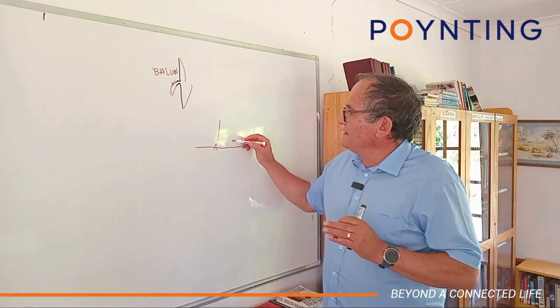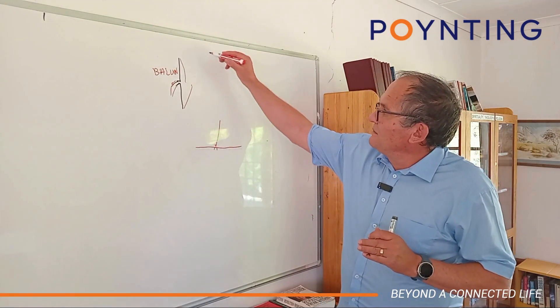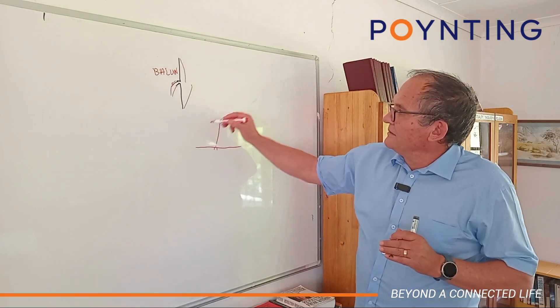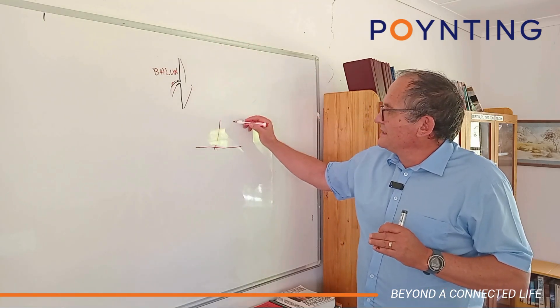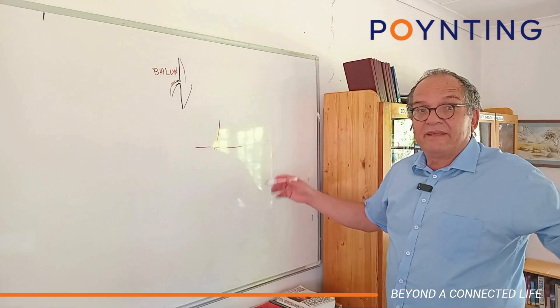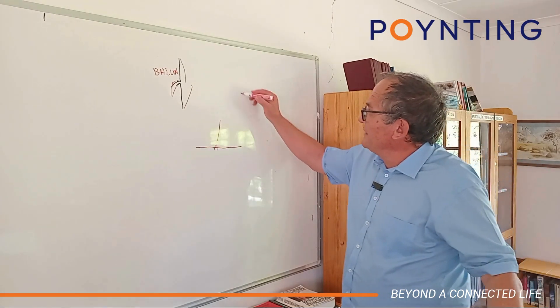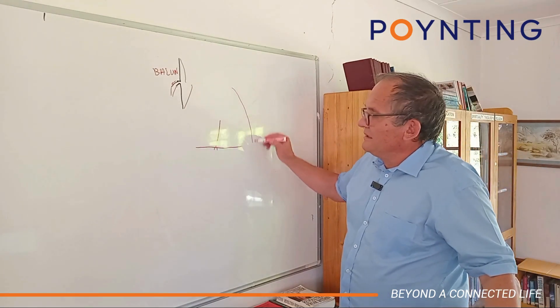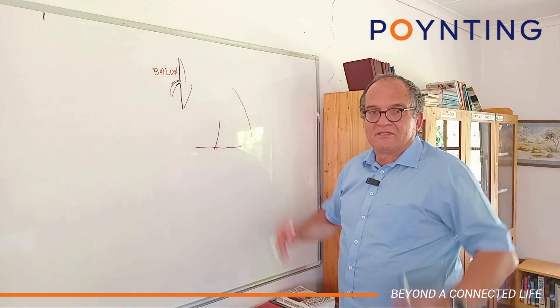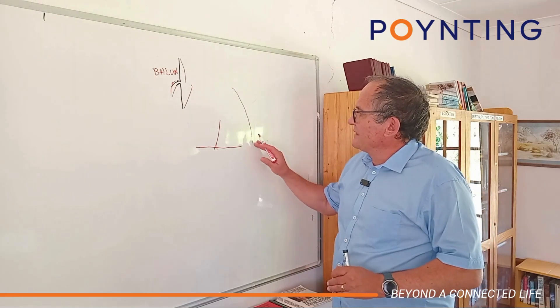But what really happens is it also gives you a fictitious 3dB gain. The reason for that is that where that guy would re-radiate a pattern that goes up and down, this guy theoretically, if it's on a very large so-called infinite ground plane, puts all the power in the one hemisphere, so it doubles the power.